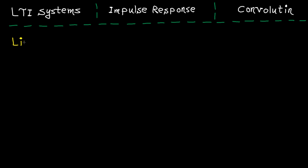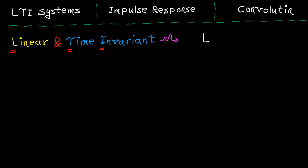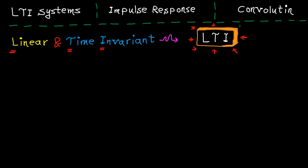In the last session, I talked about linear and time-invariant systems. Now, if a system is linear and time-invariant, it's called LTI, which stands for linear time-invariant. LTI systems are extensively used in signal processing. In fact, I can easily say they form the foundation of signal processing. That's why it's very important to fully understand what LTI means.